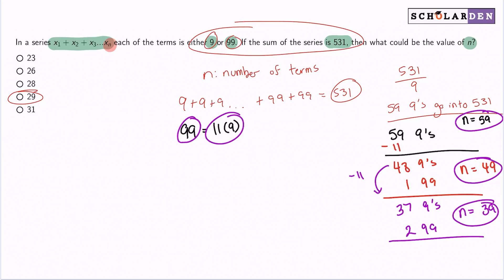So with that said, if I go down one more, you'll be able to see that we'll have 26 nines and 3 ninety-nines. And that makes up 29 total numbers, which is why 29 is the answer.